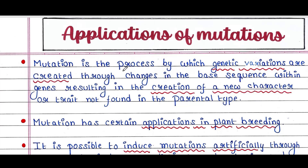Mutation is the process by which genetic variations are created through changes in the base sequence within genes, resulting in the creation of a new character or trait not found in the parental type. So mutation generates genetic variations which create new characters different from the parent.